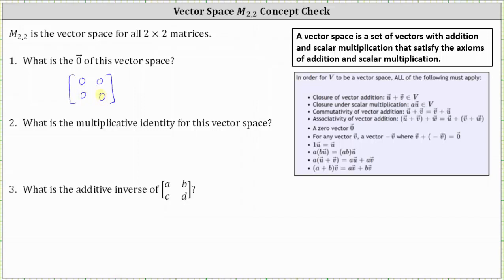Number two, what is the multiplicative identity for this vector space? This is referring to the property one times vector U equals vector U. So we're looking for a two by two matrix where if we multiply it by, let's say matrix A in M22, the product is matrix A.